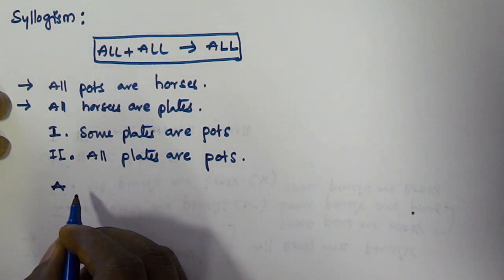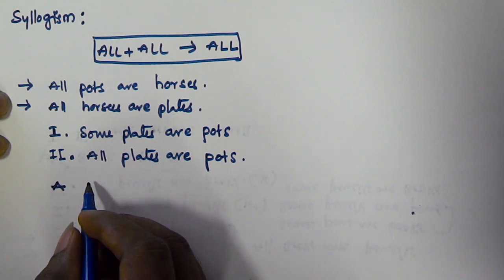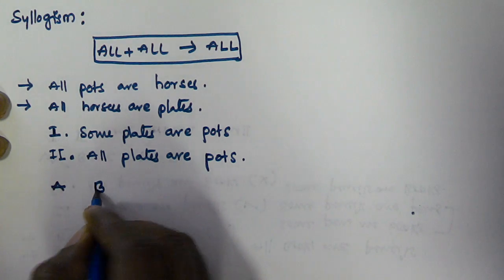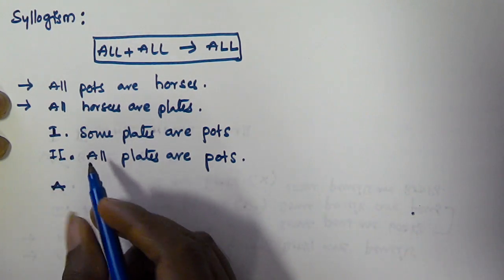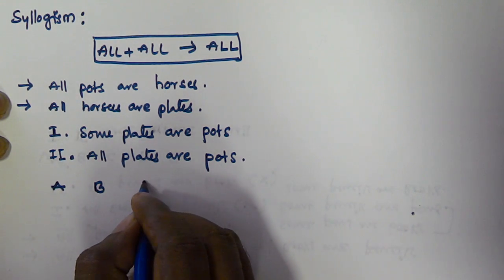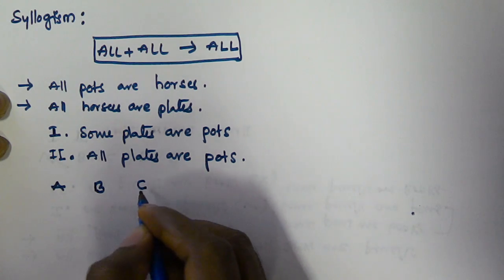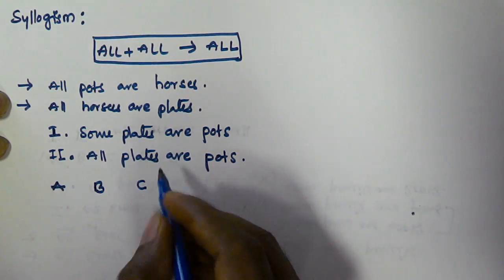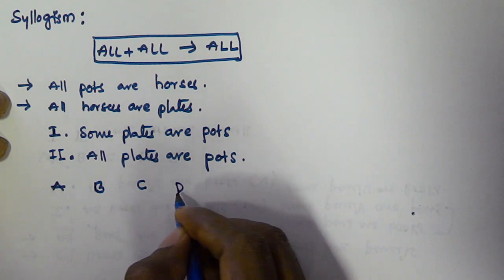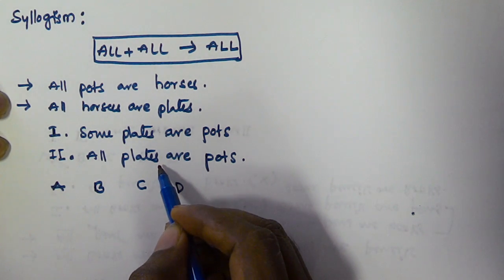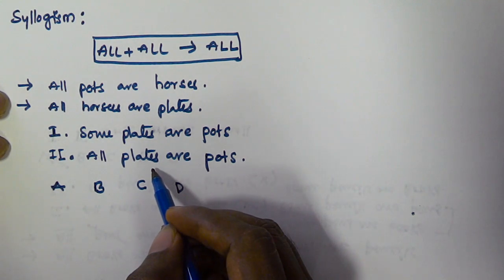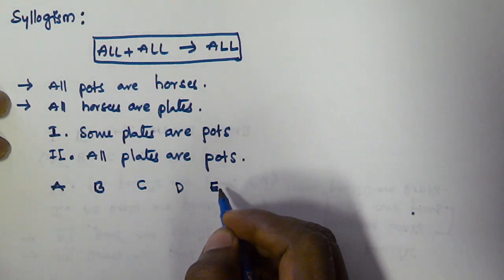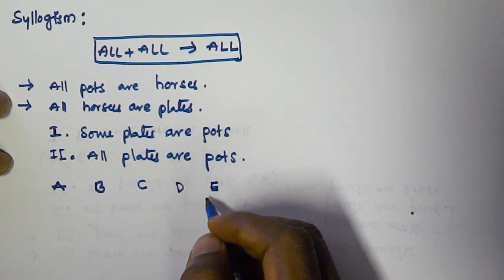There are five options given: A if only conclusion one is true, B if only conclusion two is true, C if either conclusion one or conclusion two is true, D if neither conclusion one nor conclusion two is true, and E if both the conclusions are true.